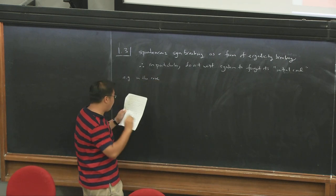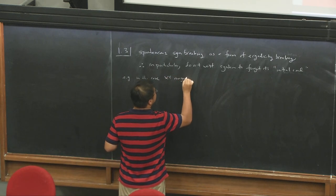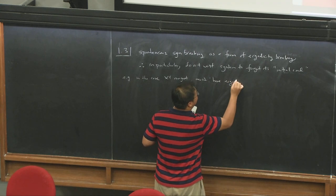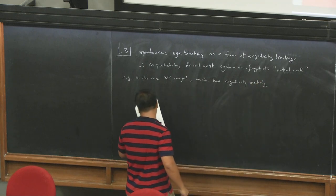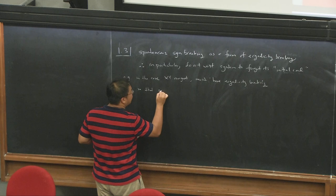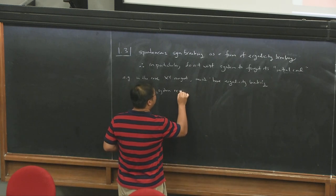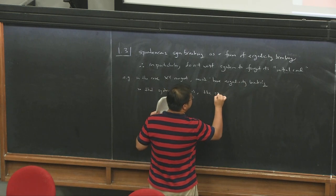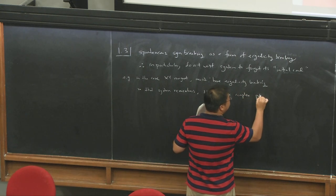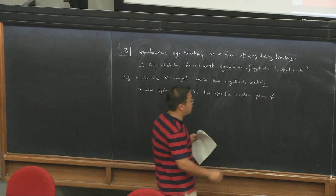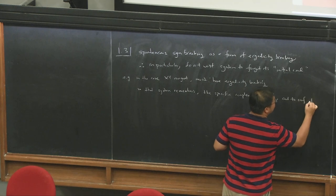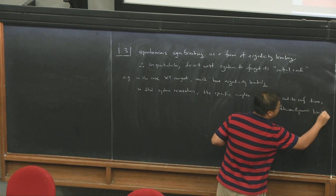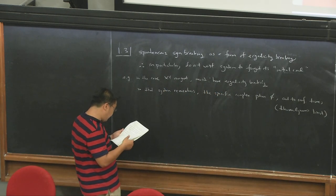In the case of the XY magnet, one must have ergodicity breaking so that the system remembers the specific complex phase phi that it's ordered to out to infinite times—thinking in general in the thermodynamic limit. It's very natural to think of spontaneous symmetry breaking as a form of ergodicity breaking, and to think about the symmetry as playing the role of what separates the different pieces of the phase space.